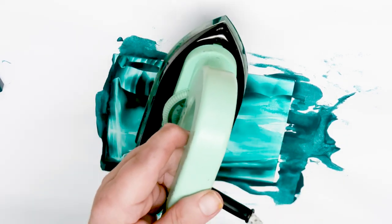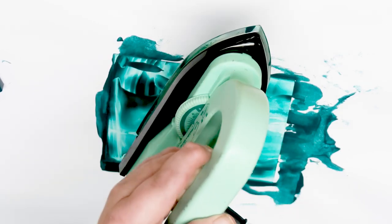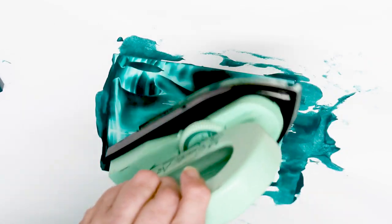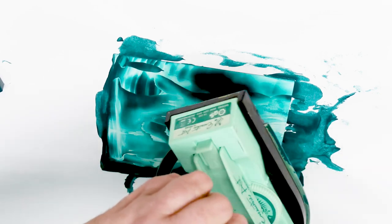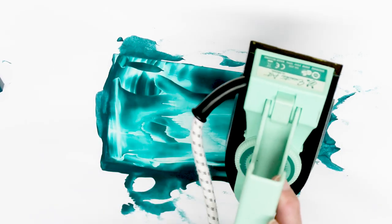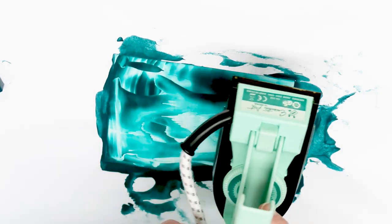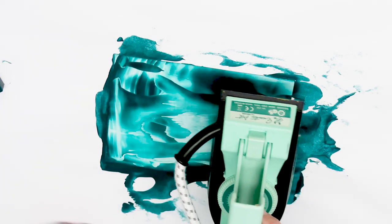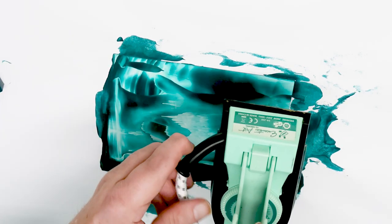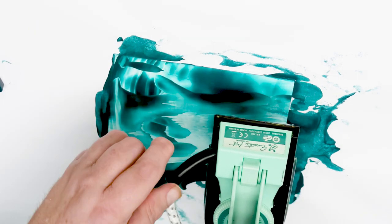If you turn the iron in your hand so that the pointy part of the iron is facing yourself and the square part of the iron is at the back like so, remembering that the first almost an inch of the iron is plastic.